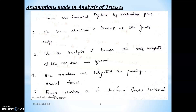The truss structure is loaded at joints only. In the case of beams, the member carries distributed load, but in the case of trusses, loads act at joints only. Also, in the analysis of trusses we ignore the self-weight of the members. The members are subjected to purely axial forces only — meaning either tensile forces or compressive forces; no other forces can occur in trusses.